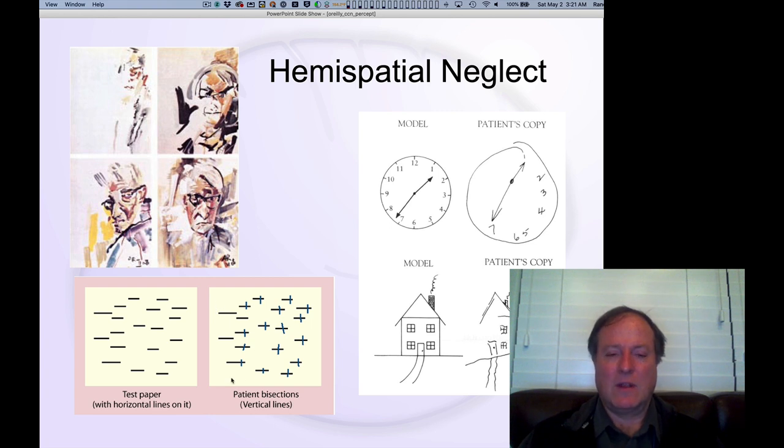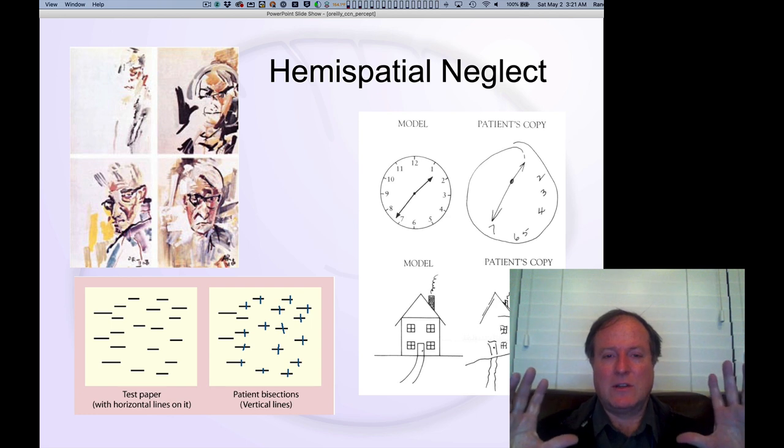One is that lines on the left hand side of the larger overall sheet of paper end up being neglected so they're not bisected at all. And then within each individual line you also see that the bisections tend to be over on the right hand side.